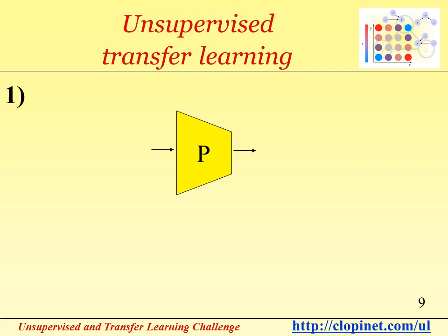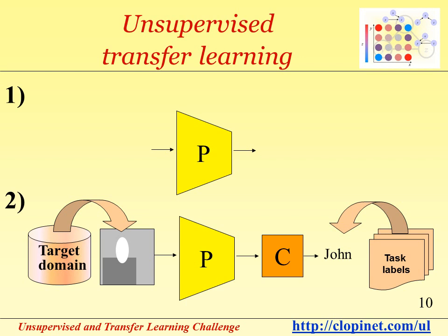After this first step of learning without any label, we can extract the preprocessor and include it in a new learning machine composed again of two modules: a preprocessor and a classifier. This time, using data from the target domain, we can retrain the whole system to predict labels. In this step, you can either train only the classifier module or fine-tune the preprocessor module as well. We benefit from having trained the preprocessor on a large number of samples from the source domain, so it will be pre-trained and therefore perform better than if trained only on the target domain.